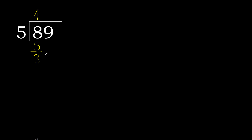Bring down to get 39. 5 multiplied by 8 is 40 — that's greater. 5 multiplied by 7 is 35 — that's not greater. So 39 minus 35 is 4.